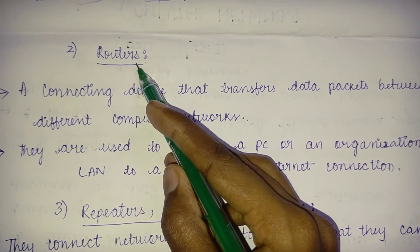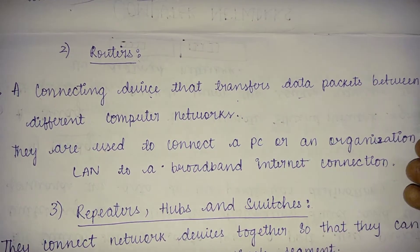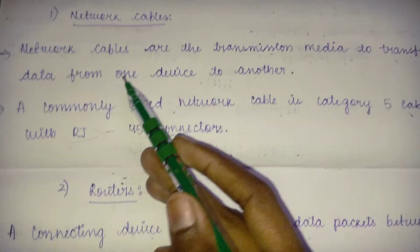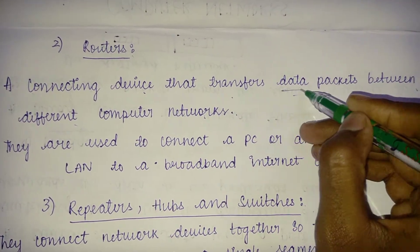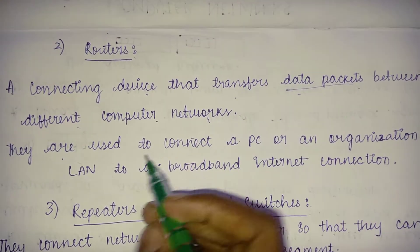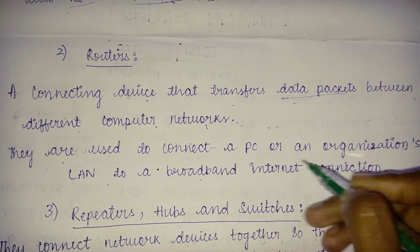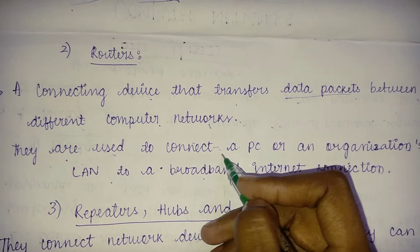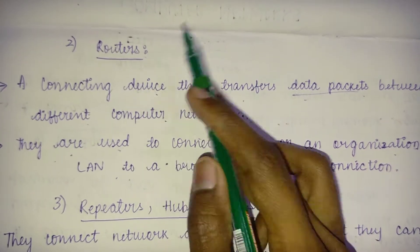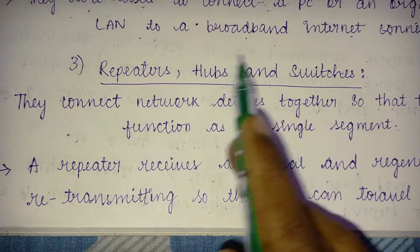Next, after setting up the cables, we need to set up routers. Routers are a connecting device that transfers data packets between different computer networks. They are used to connect a PC or an organization's LAN to a broadband internet connection.